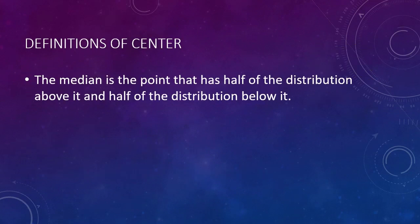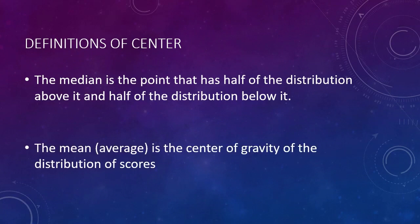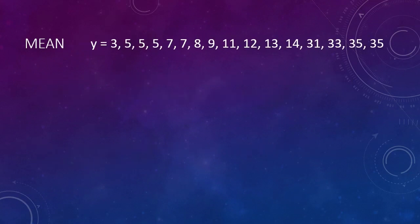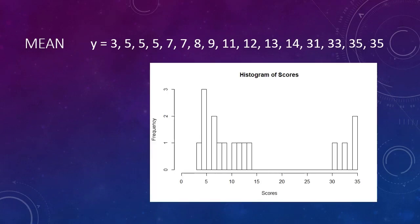There is another way to define the center of a distribution, and that is the center of gravity. We call this the mean. Many people know it as the average. Let's look at this list of scores. I have created a histogram for these scores. There are 16 scores.